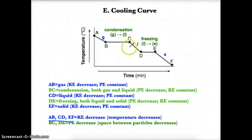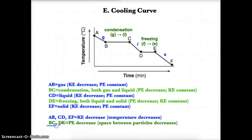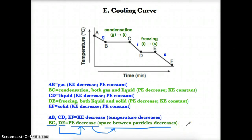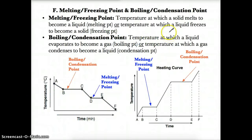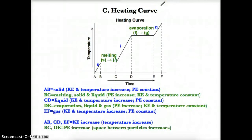To summarize: on a cooling curve, during the first, second, and third negative slopes, the kinetic energy is decreasing because the temperature decreases. During the first and second flat lines, the potential energy is decreasing because the space between particles decreases — during condensation going from gas to liquid, and during freezing going from liquid to solid. Make sure you memorize the heating curve slide and the cooling curve slide.